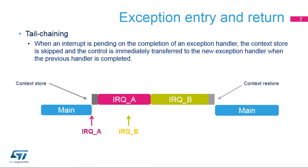When an interrupt request with lower or equal priority is raised during execution of an interrupt handler, it becomes pending. Once the current interrupt handler is finished, the context saving and restoring process is skipped and control is transferred directly to the new exception handler to decrease interrupt latency.